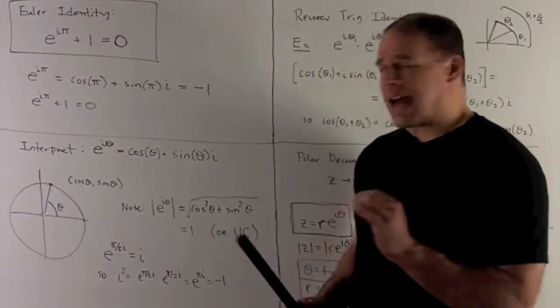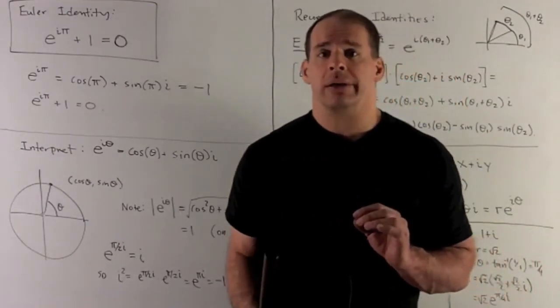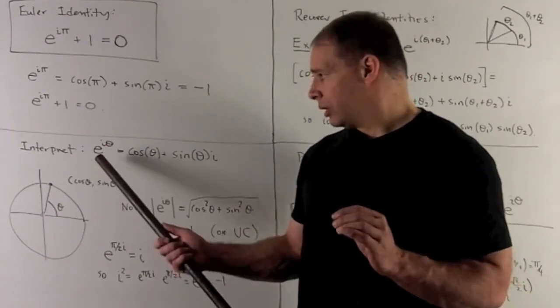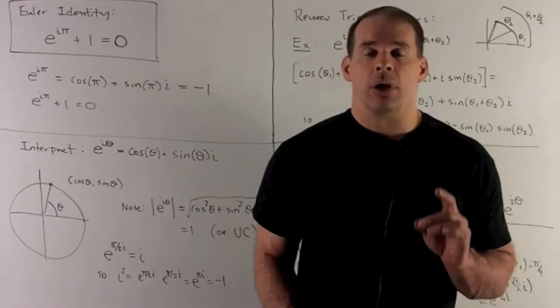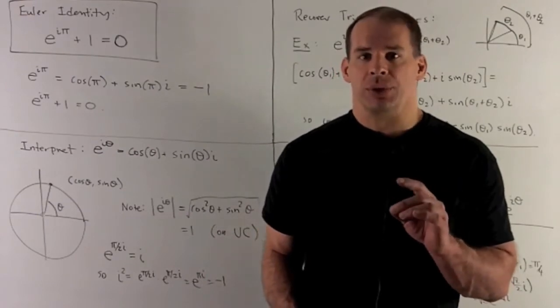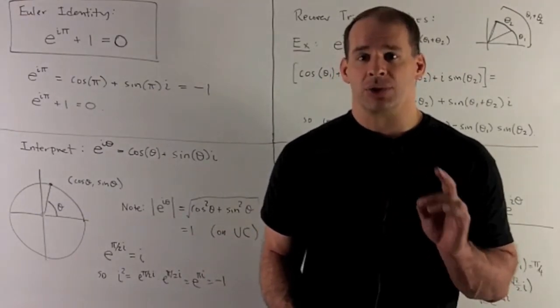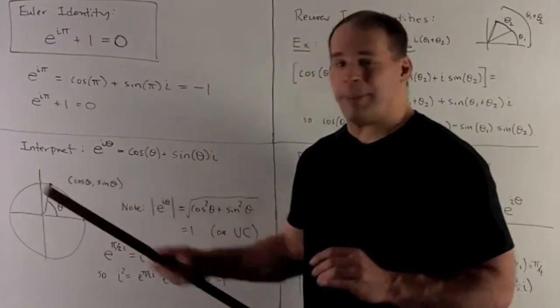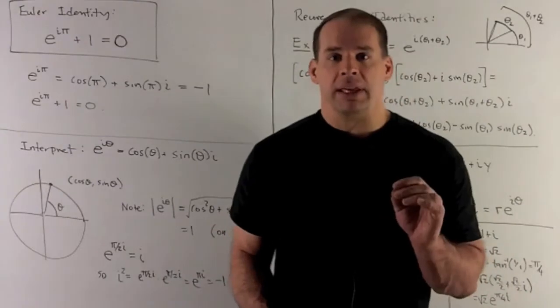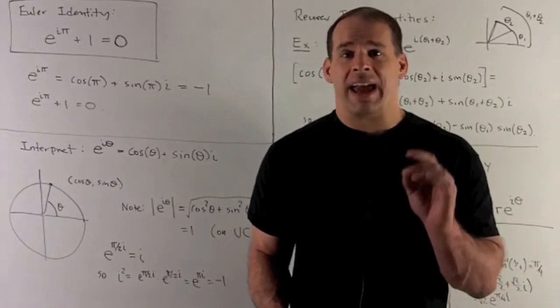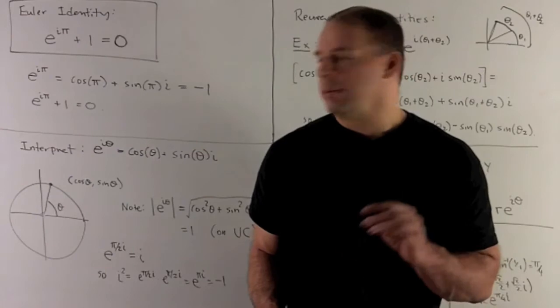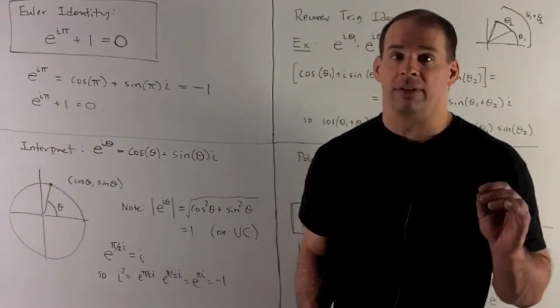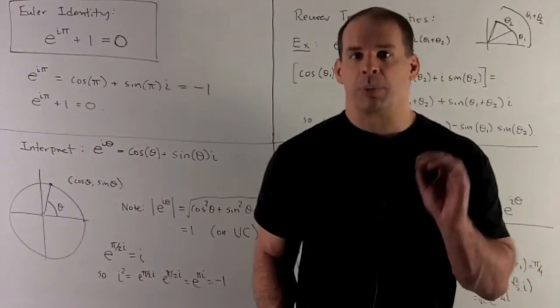Now, how about I squared equal to minus 1? So first, let's figure out what I is in terms of our Euler formula. Well, I is equal to 0 plus 1 times I. So it's going to be the point 0 comma 1. That's up here at pi halves. So that means E to the pi halves I is equal to I, which feels weird because you have an I in the exponent, and you have an I down on the ground level. But it makes perfect sense.